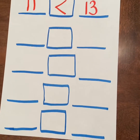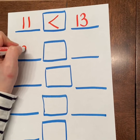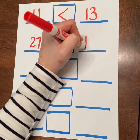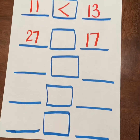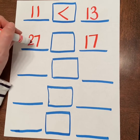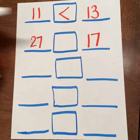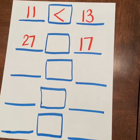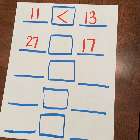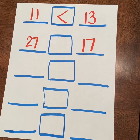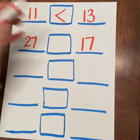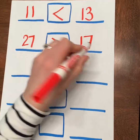Next one — let's write the numbers 27 and 17. Which one is greater? If you think you know, go ahead and draw the alligator's mouth in the middle box. Yes, 27 is greater than 17.